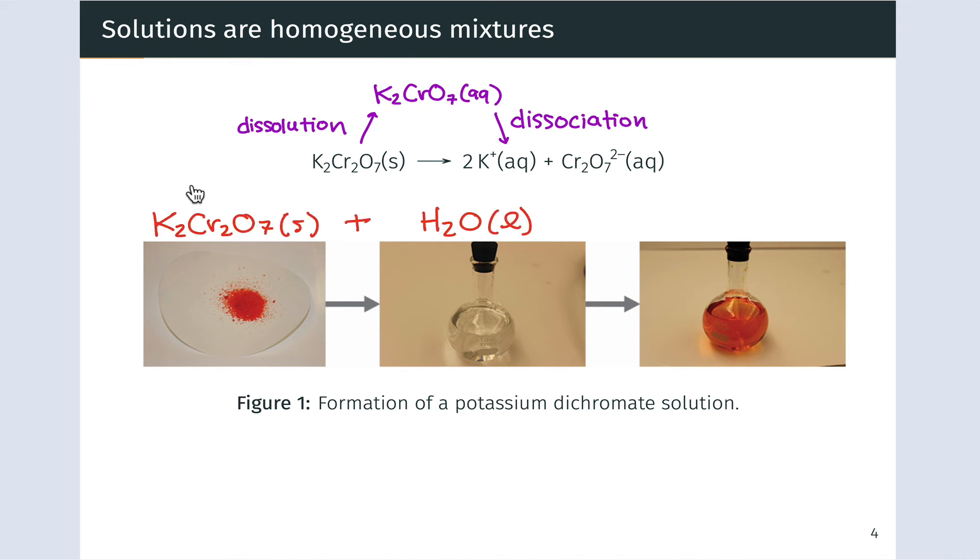And so we can think about this as solid potassium dichromate combining with water to produce an aqueous solution. And the aqueous solution is homogeneous, uniformly orange throughout, still in the liquid phase because water is the dominant component, but containing dissolved K+ and Cr2O7 2- ions.